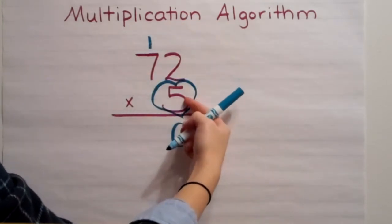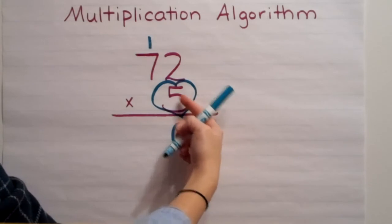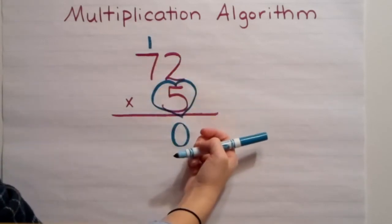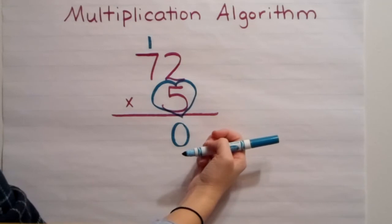Then, I come back to my heart, which is 5. 5 times 7 is 35. Then I add my 1, which is 36.